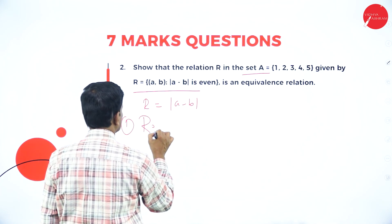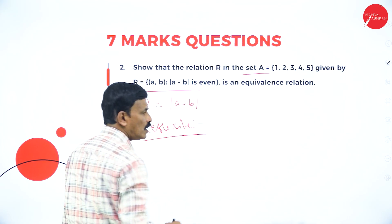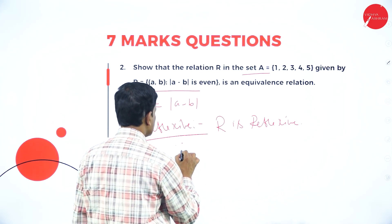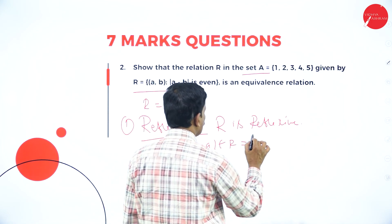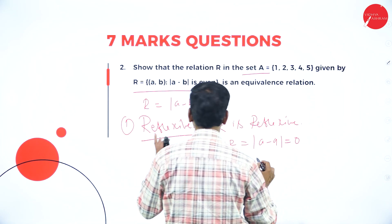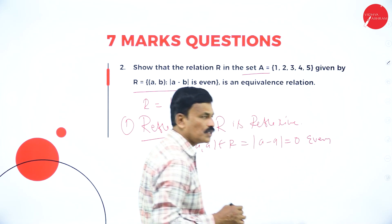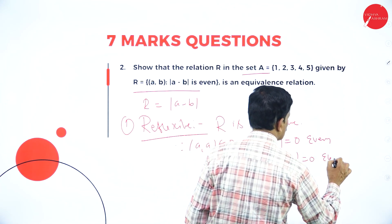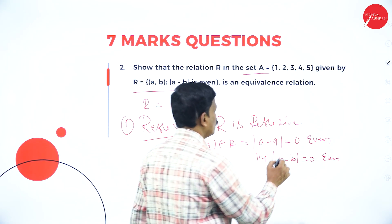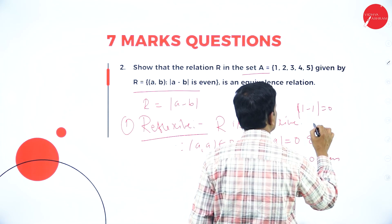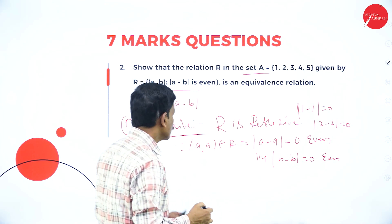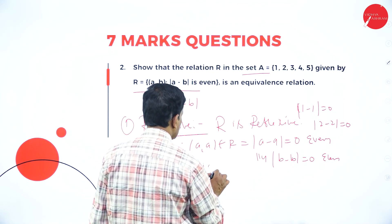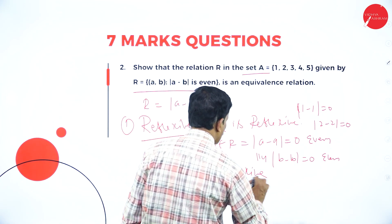Let us verify the reflexive property. R is reflexive because (a, a) belongs to R implies |a − a| = 0, and 0 is an even number. Similarly, |b − b| = 0 is also even. For example, |1 − 1| = 0, |2 − 2| = 0. So (a, a) belongs to R implies a − a = 0, which is an even number. Therefore R is reflexive.